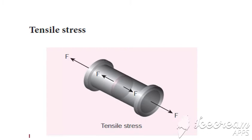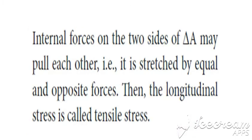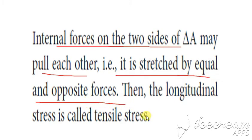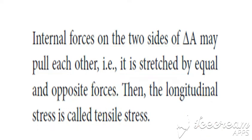Tensile stress occurs when internal forces on two sides of ΔA pull each other — the object is stretched by equal and opposite forces. Because the length changes due to these equal and opposite pulling forces, that longitudinal stress is called tensile stress.